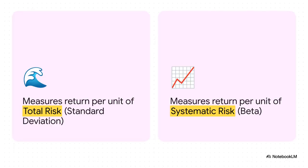Here's the fundamental difference. The super popular Sharpe ratio looks at total risk — it penalizes an investment for any and all volatility, period. But the Treynor ratio comes along and makes this fascinating argument: why should we get penalized for risks that we can easily diversify away? So it focuses only on the risk that's tied to the entire market — the kind you really can't escape.